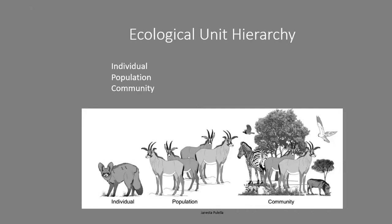Next you have a community — this is all the different species, the living things within an area, which may be interacting with each other. You've got plants, various mammal species, birds, insects — that forms a living biotic community. From there you go on to the ecosystem, which is basically a self-sustaining unit with both living and non-living things, which may be closed off in a defined area either by topography, geographical features, or human activities such as fencing and settlement.